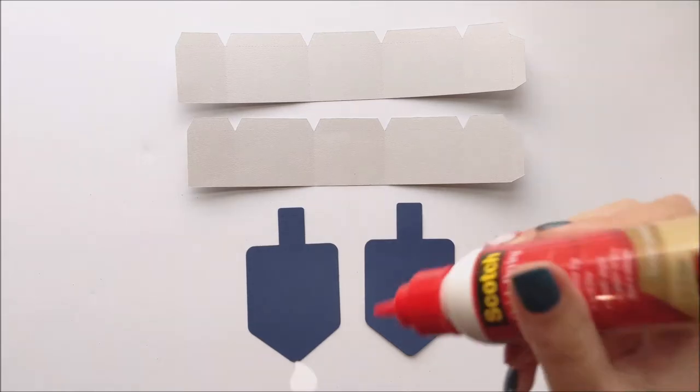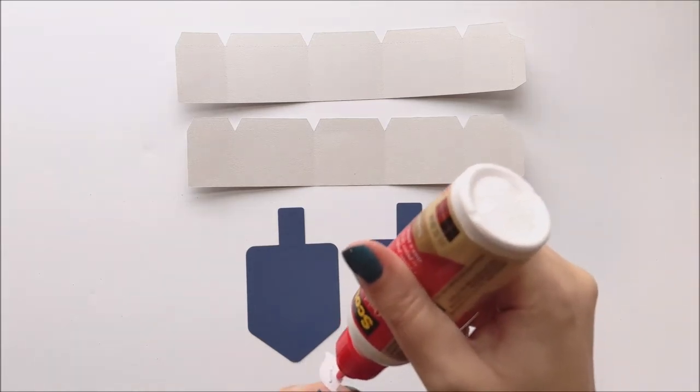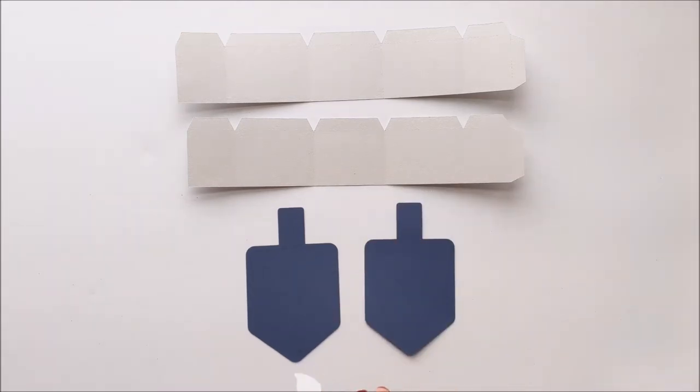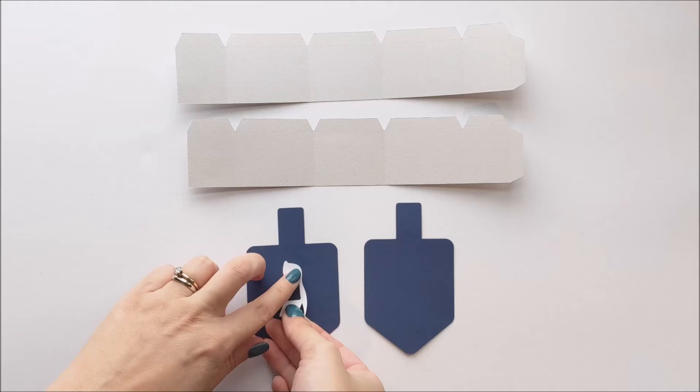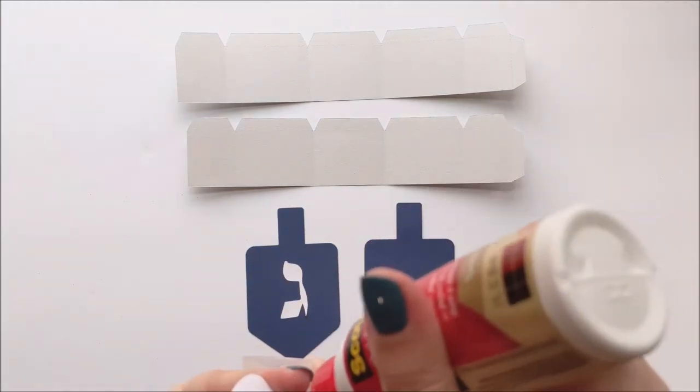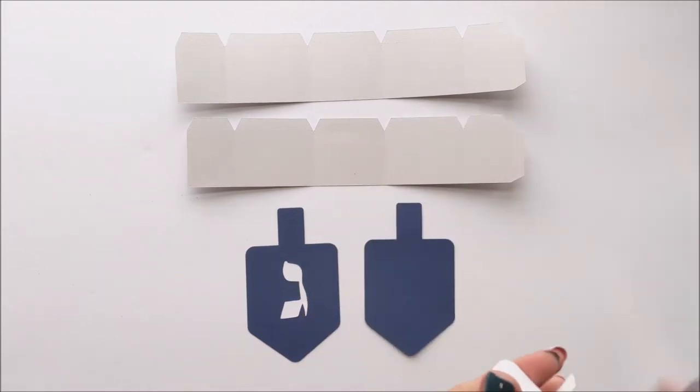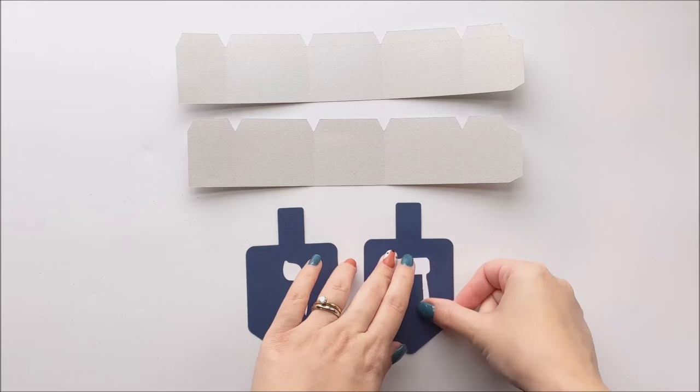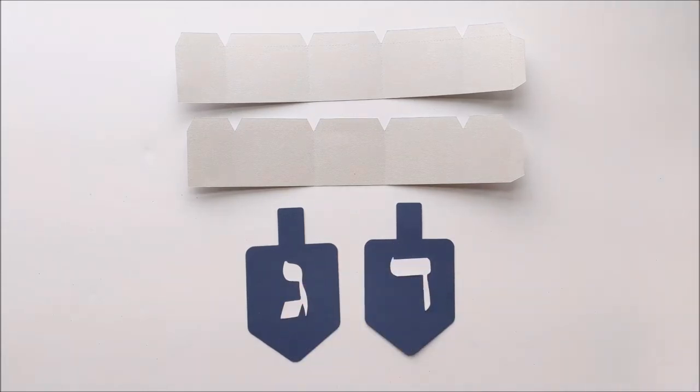You can start by gluing a symbol to each one of your dreidels. Three of the symbols are just one piece, but if you're using hay, that's in two pieces.